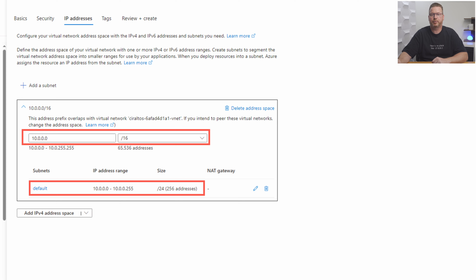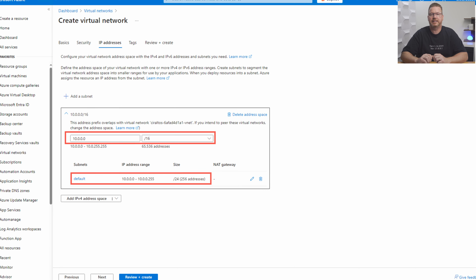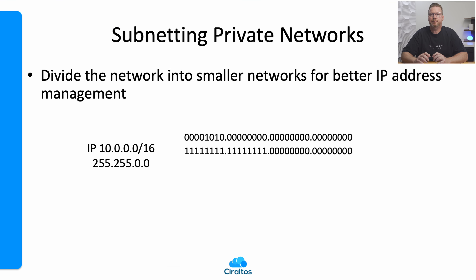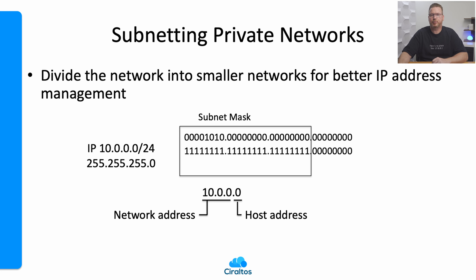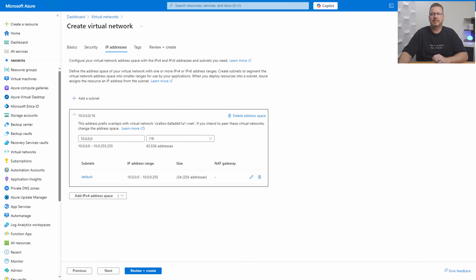Let's go back to the Create a Virtual Network settings in Azure. Here we have the address space of 10.0.0.0/16 and the subnet of 10.0.0.0/24. Address spaces on a VNet define all the IP addresses that will be in all subnets on the VNet. The 10 network is subnetted — we took some of the client IDs and used them for the network ID. The /16 indicates the first two octets are used for the network; the network ID is 10.0, and the remaining bits are used for client IDs. The default subnet is further subnetted to /24, meaning the first 24 bits — the first three octets — are used for the network ID, and the last octet is for client IDs.